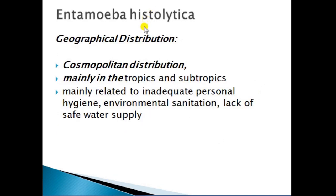This slide shows the geographical distribution of Entamoeba histolytica. It has a cosmopolitan distribution, meaning it is found everywhere. It is mainly present in tropical and subtropical regions. The chances of infection are more if adequate personal hygiene is not maintained, if proper disposal of fecal matter is not done — which can lead to environmental pollution — and if the water supply is not properly maintained, leading to mixing of sewage water.